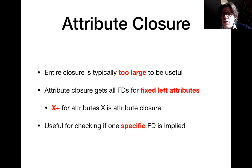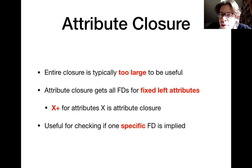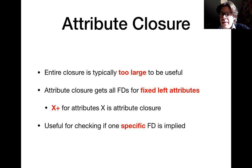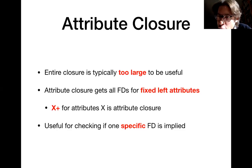That leads to attribute closures. An attribute closure essentially tells you what are the attributes for which you can infer the values, given all values for a specific set of attributes. We typically denote that with the plus sign: if you have some set of attributes X, then X+ is the attribute closure for X — those are all the attributes for which you can infer values based on the values in X using the functional dependencies you have. This gives us a subset of FDs from the closure. You often want to check whether functional dependencies with specific attributes on the left-hand side can be inferred, and the way to check is by using the attribute closure.